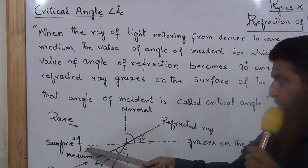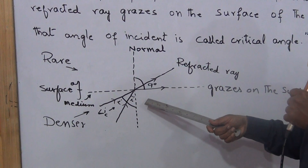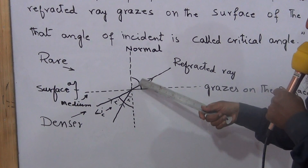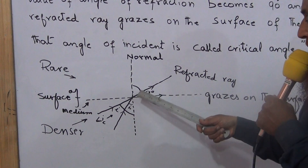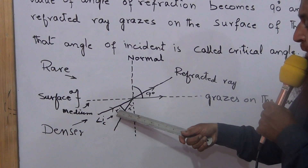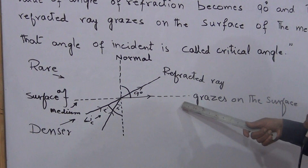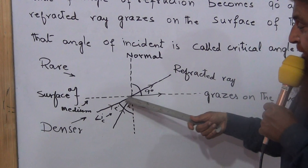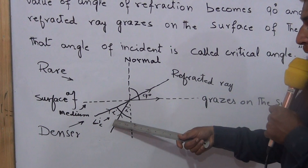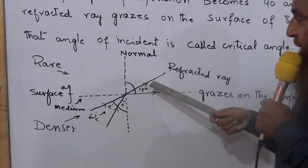Now look at the diagram. This is the surface of the medium, shown by a dotted line. This is the normal, meaning the angle of 90 degrees on the surface. This is the incident ray and it is entering into the rare medium from the denser medium, so it bends away from the normal. Now we are increasing the angle of incidence, and now the ray of light grazes on the surface of the medium. So if we increase it further, it will be reflected. Therefore, it is called the critical angle — the angle of incidence for which the value of angle of refraction becomes 90 degrees.